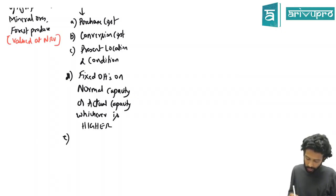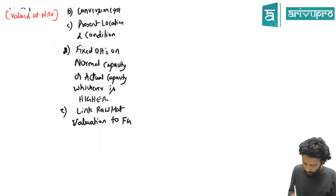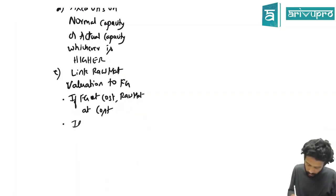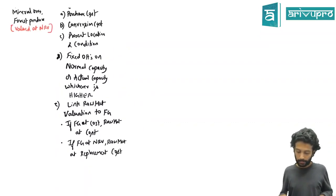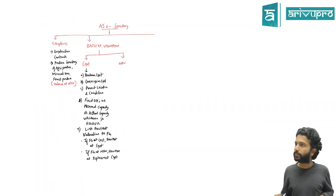When you're valuing the raw material cost stock, what is the basis of raw material? Link raw material valuation to FG. Meaning what? If FG at cost means raw material at cost. If FG at NRV means raw material at replacement cost. That is what we have seen so far. Summary, this is on the last day.